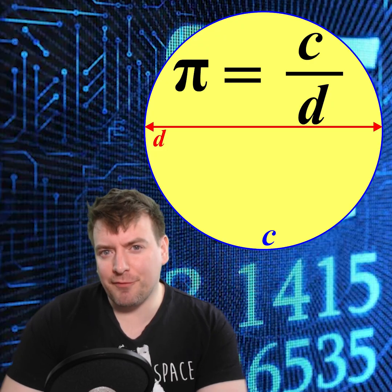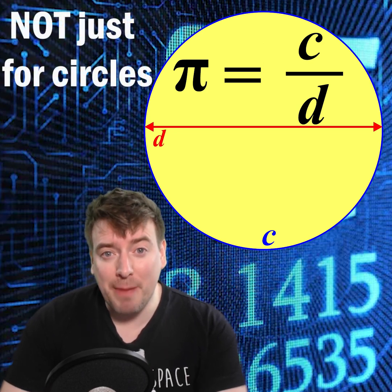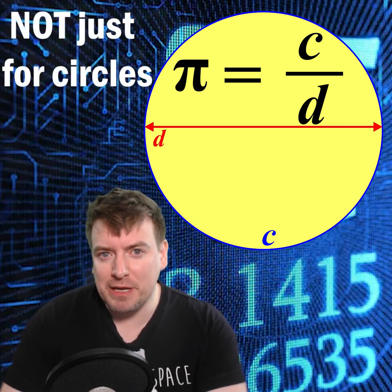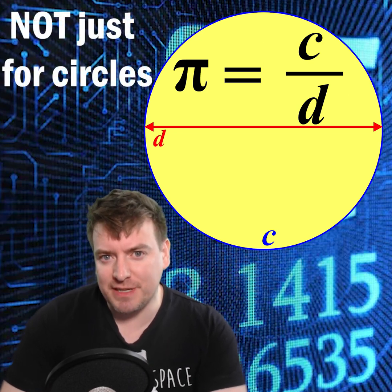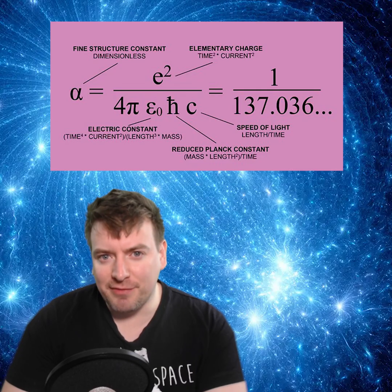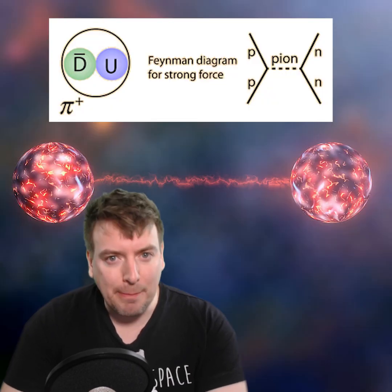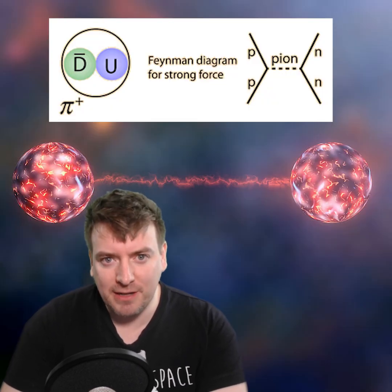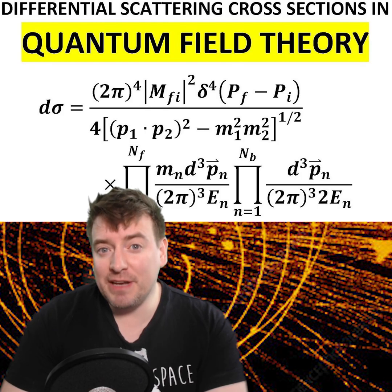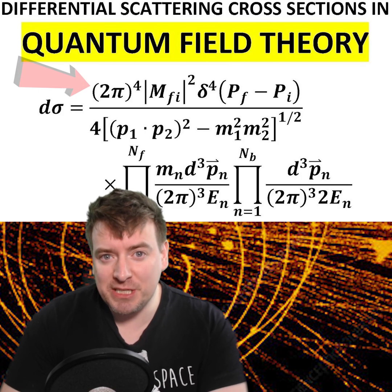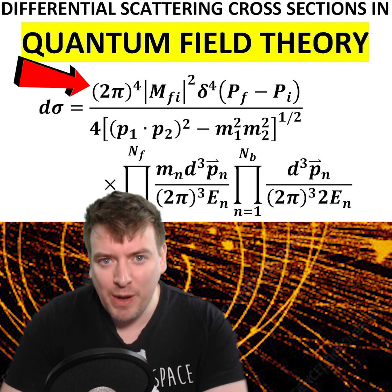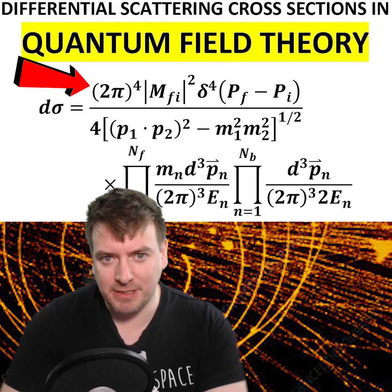Pi is the ratio of the circumference of any circle to its diameter, but it also shows up everywhere in fundamental particle physics — in the strength of electromagnetic interactions, we label a composite particle after it, and even in the calculations of interaction rates between fundamental particles.